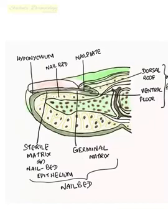The hyponychium is the fingertip skin present immediately beneath the nail. The nail bed is soft tissue present beneath the nail plate and the dermis. Nail plate growth can be divided into three parts: from the germinal matrix, from the dorsal roof, and from the sterile matrix.